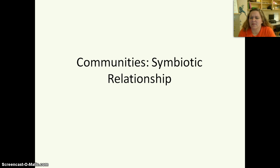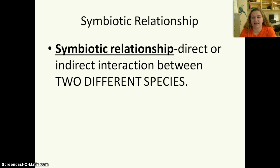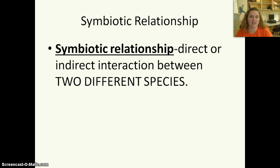Whenever we talk about communities, we're actually talking about symbiotic relationships. A symbiotic relationship is a direct or indirect interaction between two different species. A good example of this includes you and your cat, because you depend on your cat for love and cuddles and affection, and your cat depends on you to be fed.